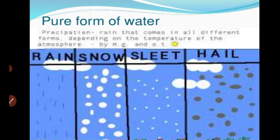The pure form of water comes from precipitation. Water gets precipitation in all different forms depending on the temperature of the atmosphere — as rain, snow, sleet, and hail. These are the pure forms of water, so the sources of water which come from precipitation are considered pure.